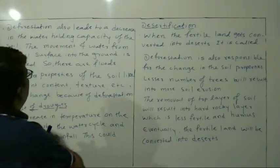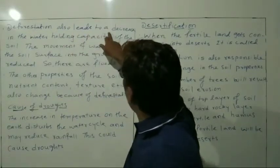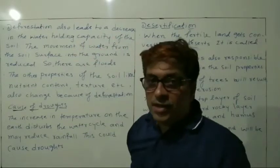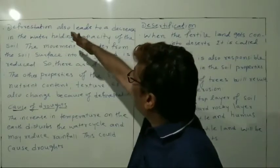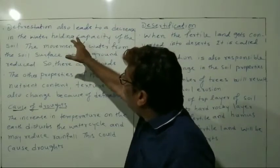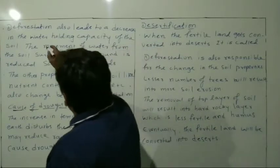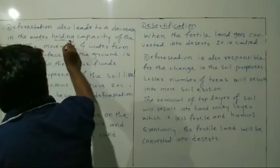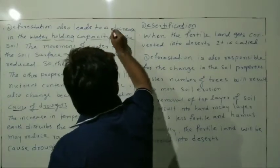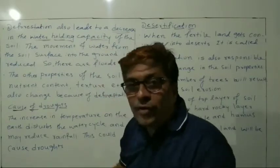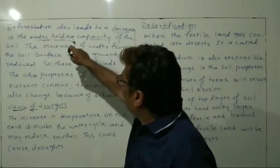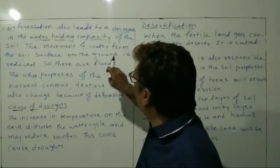Deforestation also leads to a decrease in the water holding capacity of the soil. Due to deforestation, the water holding capacity will be decreased, and the movement of water from the soil surface into the ground is reduced.